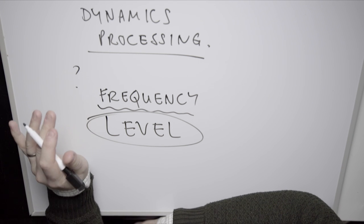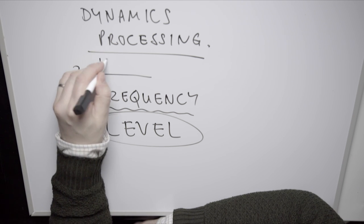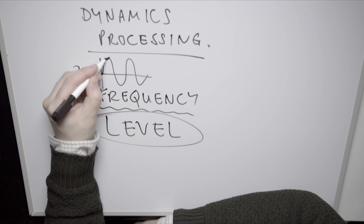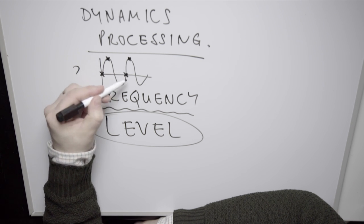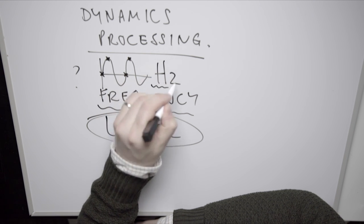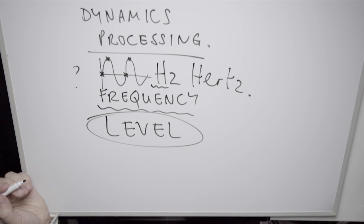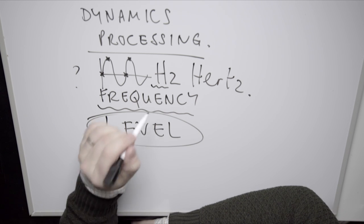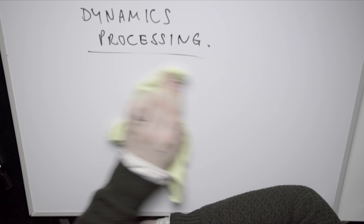Frequency — and we'll do another lecture on frequency one day — is to do with cycles per second. Essentially it relates to a waveform and how many oscillations happen every second. That is frequency, and it's measured in Hertz — note capital H, small z — because it was named after Mr. Hertz. So frequency is to do with cycles per second, or Hertz. Nothing to do with level.